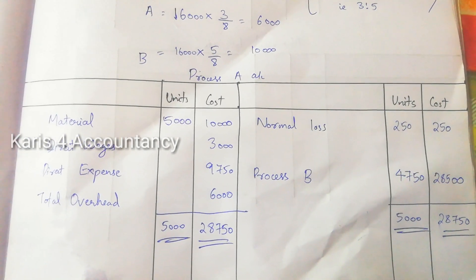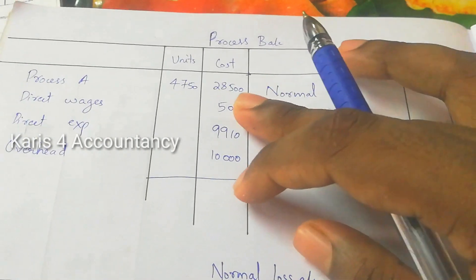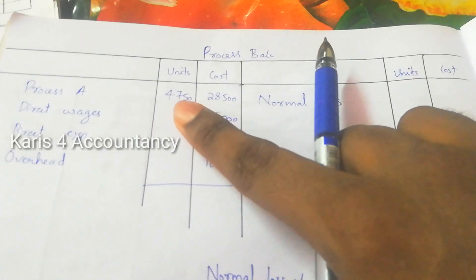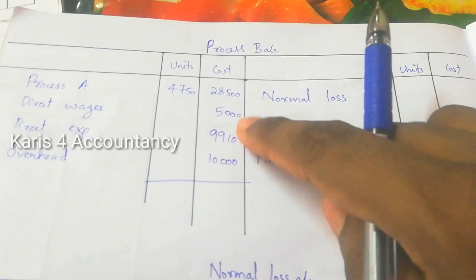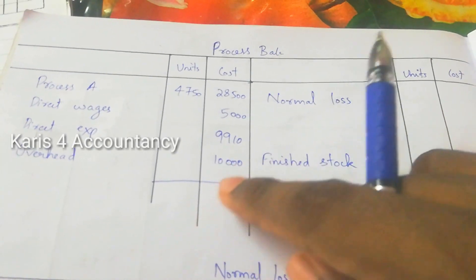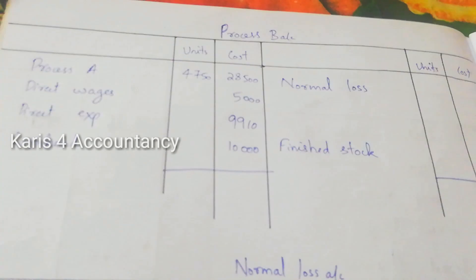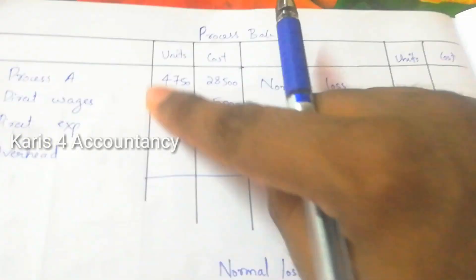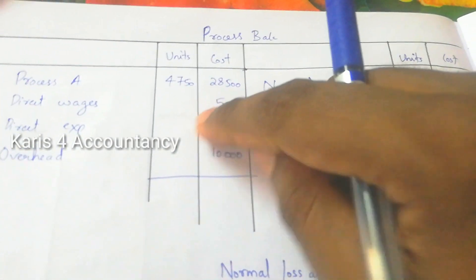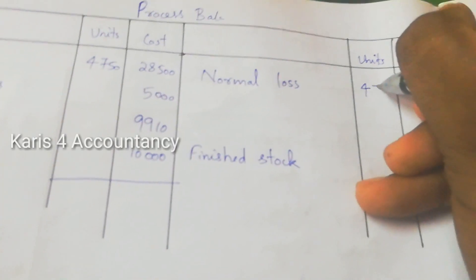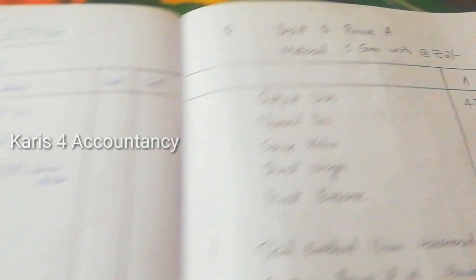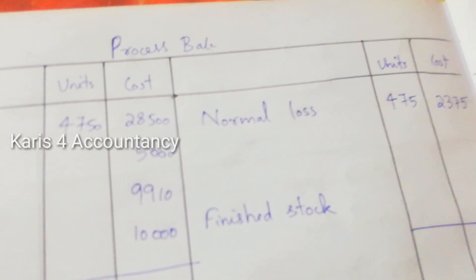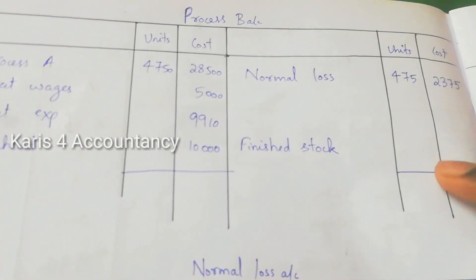Process A is now complete. For Process B: we transfer Process A units and costs. Process B has its own direct wages and overhead. Normal Loss units for Process B are calculated and the scrap value is applied — scrap value multiplied by normal loss units gives the normal loss account credit.